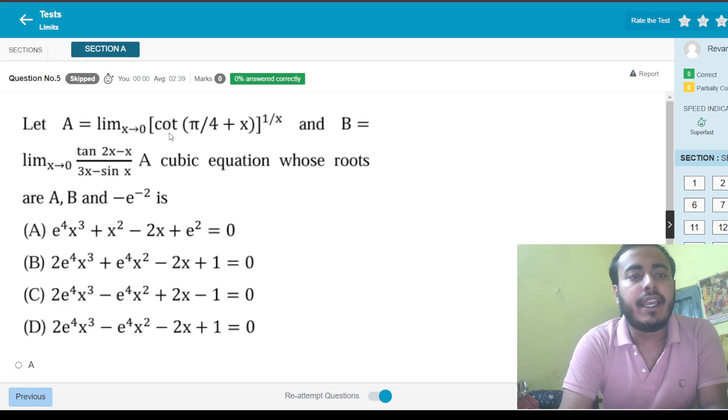For example, we have this limit. A equals to this and B equals to this. A cubic equation has roots at A, B, and minus e to the power minus 2. We have to find out A and B. A is a question which you can solve using differentiation, that is L'Hospital. If you apply L'Hospital, you get 2x squared 2x minus 1 divided by 3 minus cos x. Putting the value, you get 3 minus cos 0, which is 2 in the denominator. In the numerator, you get 2 and minus 1, so that is basically 1 by 2. So B is 1 by 2 directly.